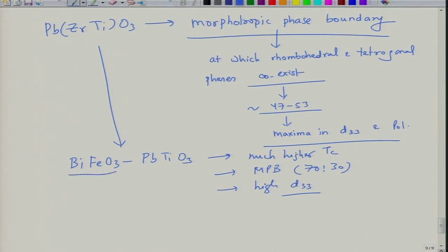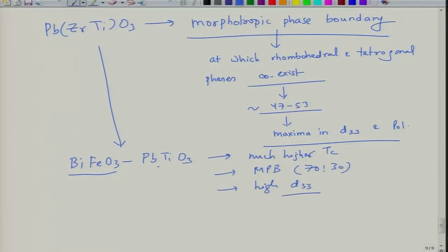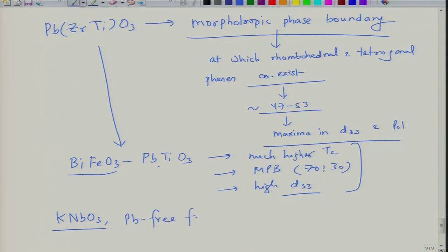The BiFeO₃–PbTiO₃ system gives a T_c higher than 500°C with d₃₃ values lower than PZT but still comparable. Other options include potassium niobate, BaTiO₃–BiFeO₃ solid solutions which are lead-free and also show a morphotropic phase boundary. I will show the phase diagram in the next class.